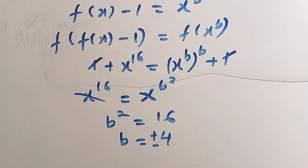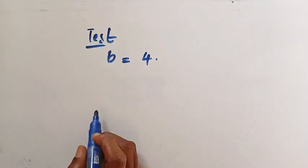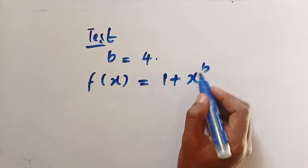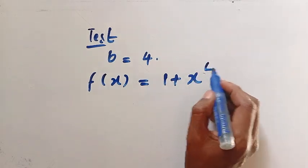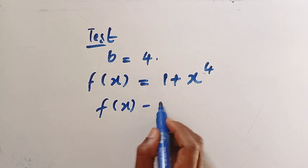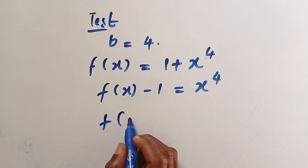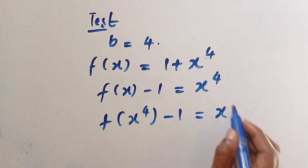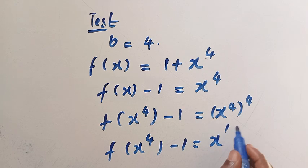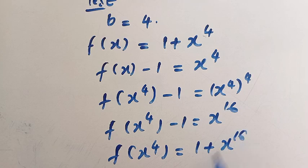How can we verify if this is truly satisfied? Let's test with b equals 4. When f of x equals 1 plus x raised to the power of b, changing b to 4 gives us 1 plus x raised to the power of 4. Checking: f of x minus 1 equals x raised to the power of 4. Introducing the function, changing x to x raised to the power of 4, we have f of x to the power of 4 minus 1 equals x to the power of 4, raised to the power of 4, giving x to the power of 16. Therefore, f of x to the power of 4 equals 1 plus x to the power of 16. This is true.